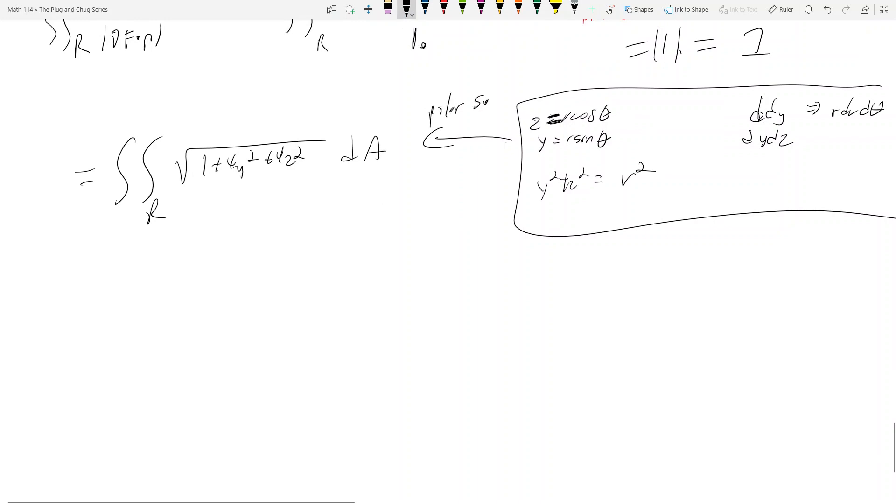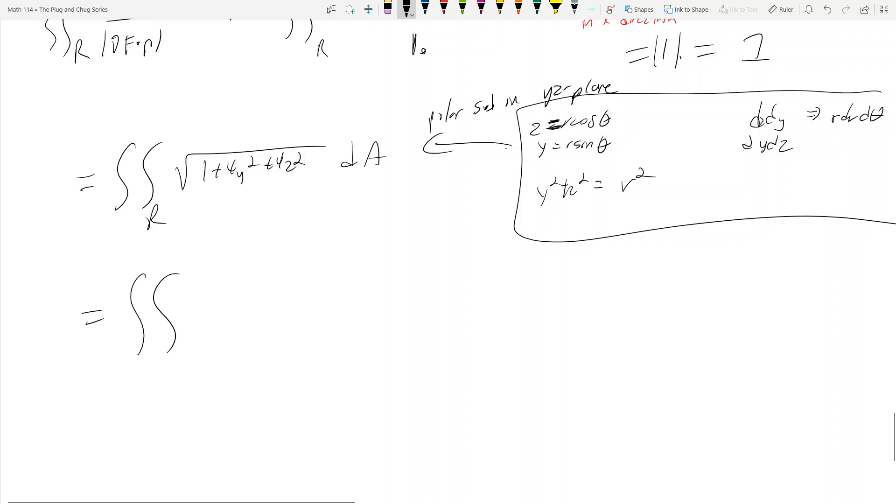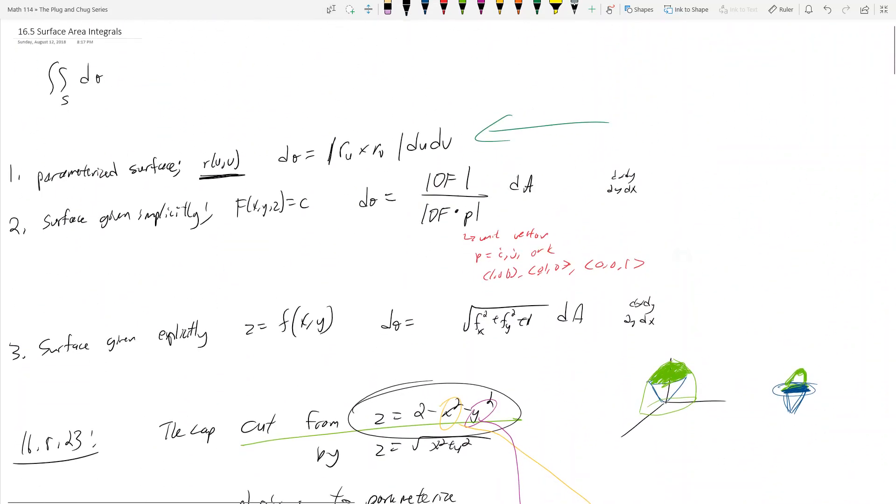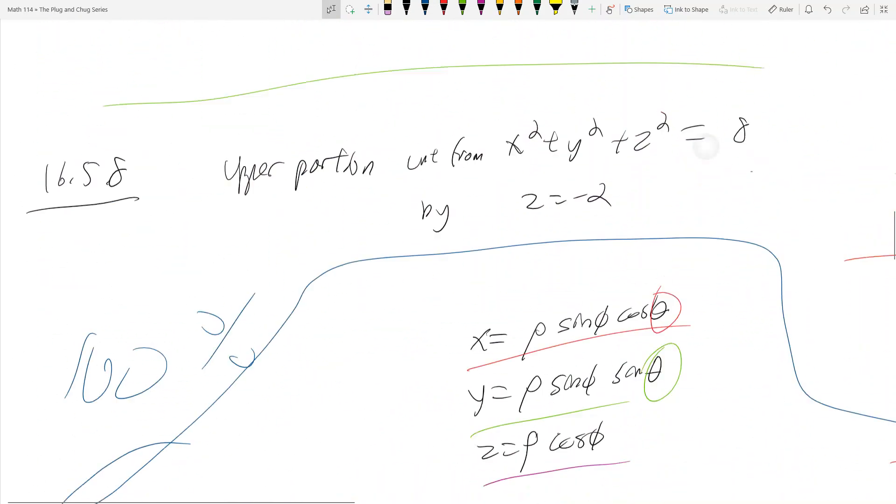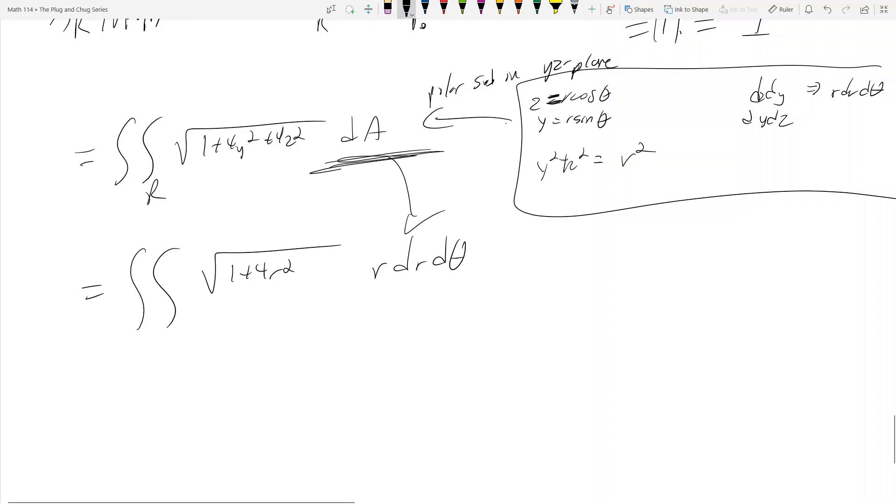This may seem hella weird, but it works. Because instead of doing x equals r cosine theta, and y is equal to r sine theta, what if I just renamed x to be z? I just straight up say my x variable is now called z. Well, y squared plus z squared is still equal to r squared. And that means dy, dz will become r, dr, d theta. So I can still make this substitution in this problem. So polar sub in the y, z plane still works.